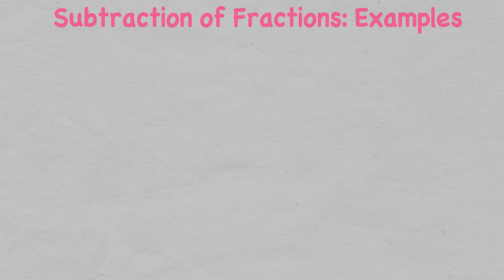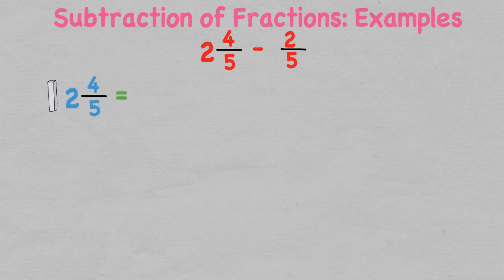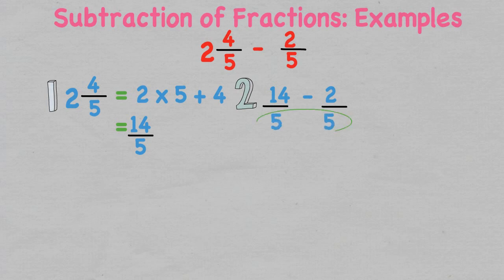Next we are going to look at subtracting mixed fractions. The steps involved are exactly the same — however, instead of adding the numerators we simply subtract them. For example, two and four over five take two over five. We change the mixed fraction into an improper fraction: two multiplied by the denominator five, and add the numerator four, leaving us with 14 over five. The fractions are alike as the denominators are the same, so we subtract the numerators but not the denominators: 14 take two leaves us with 12 over five.